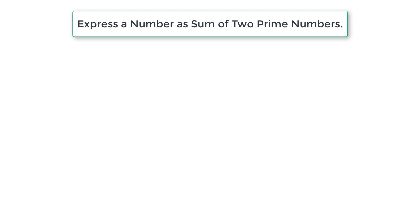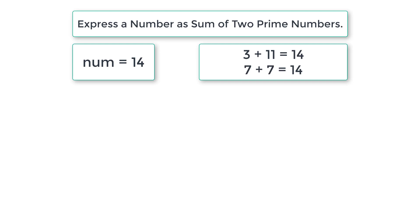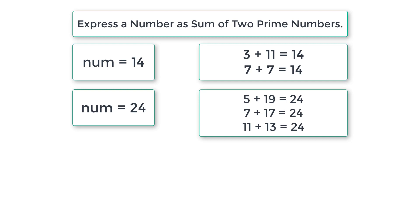If the user enters number 14, we need to output 3 plus 11 and 7 plus 7 — all these numbers 3, 11, and 7 are prime numbers. If the user enters 24, we need to output 5 plus 19, 7 plus 17, and 11 plus 13. All these numbers — 5, 19, 7, 17, 11, and 13 — are prime numbers.